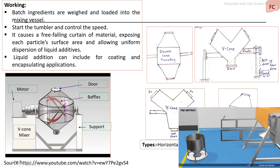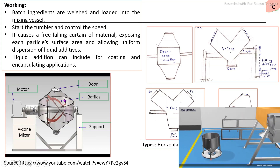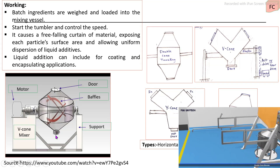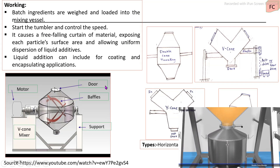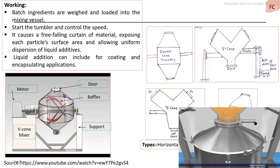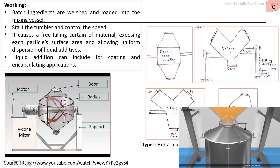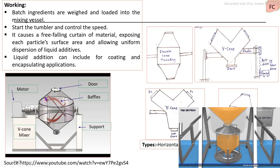The door is then closed and operated for the mixing with a specific time. After the batch, the tumbling mixer should have provision to maintain internal vacuum as per requirements. Some systems also provide internal additives for coating purposes.